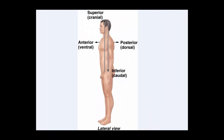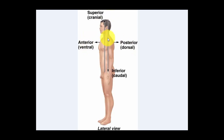Lastly, we have these directional terms. Superior means the same thing as cranial. Inferior refers to caudal, which means tail. Posterior also means dorsal, and anterior means ventral. These terms are directional terms — ways to identify different areas of the body.